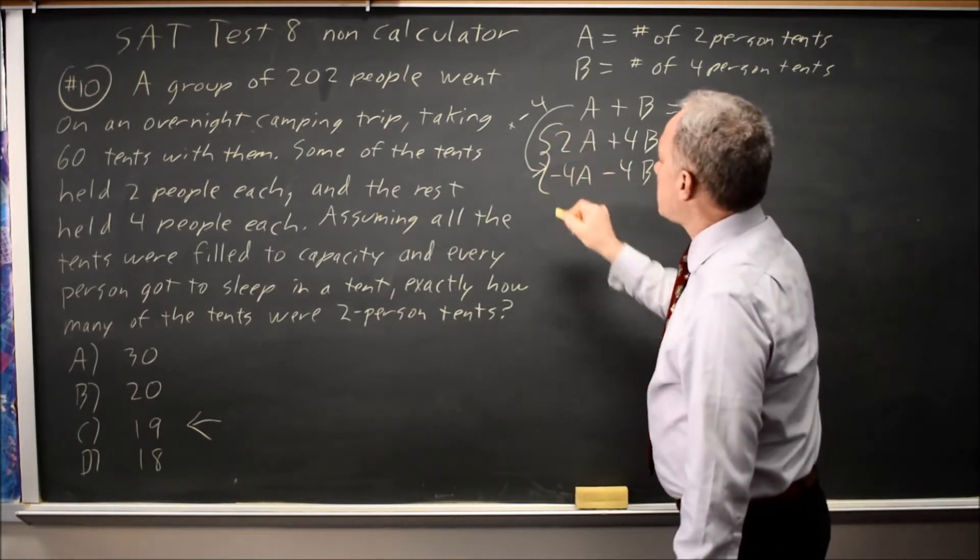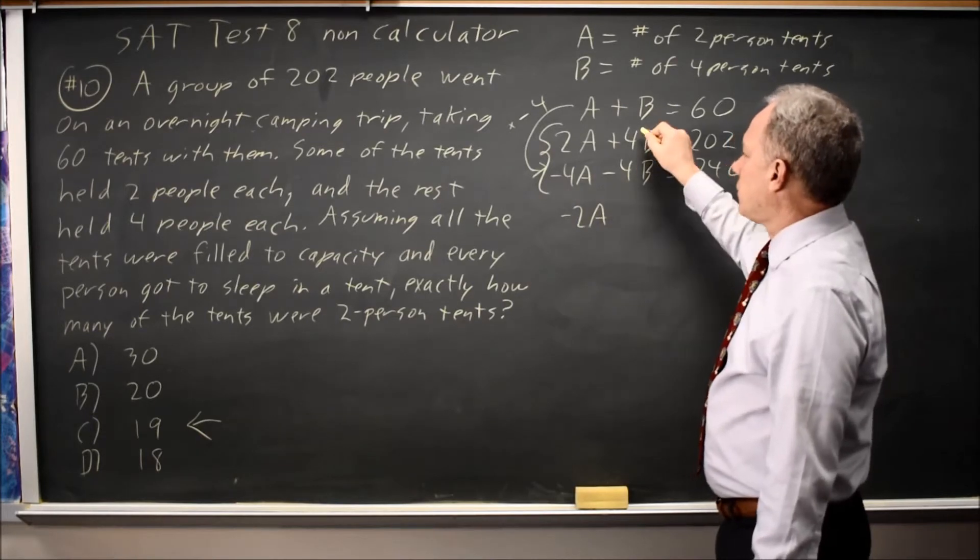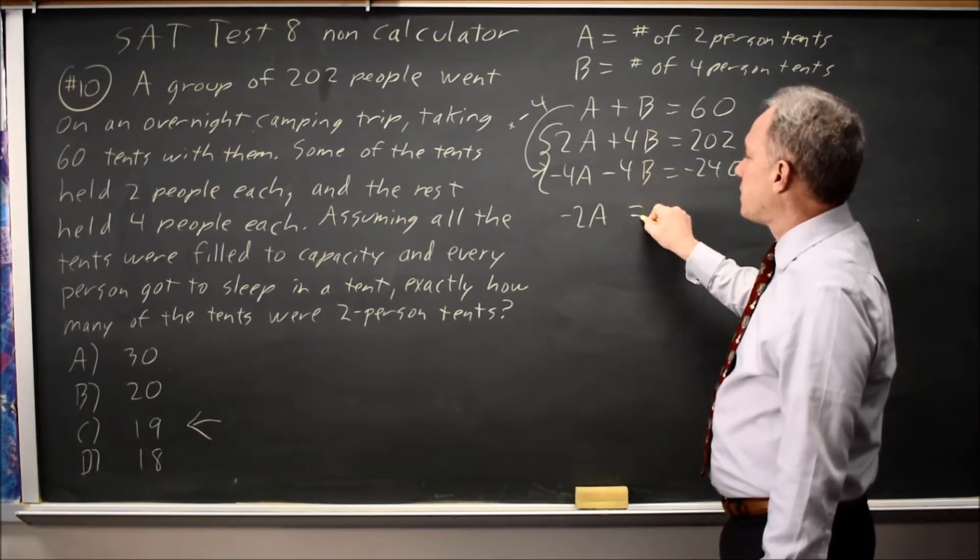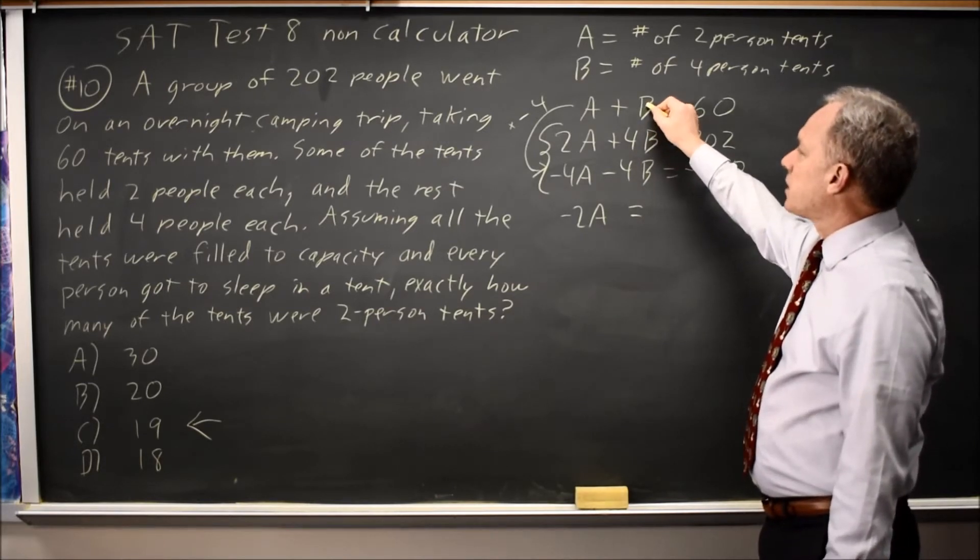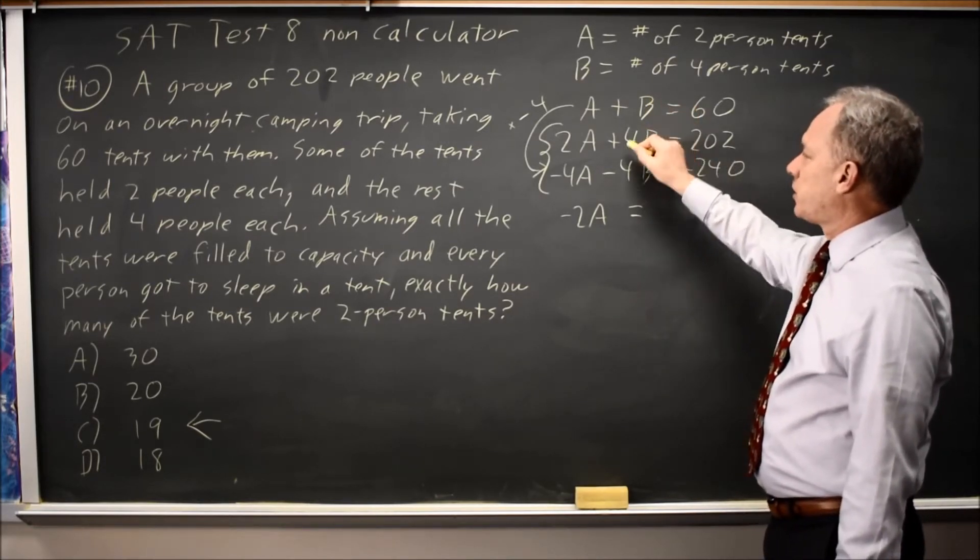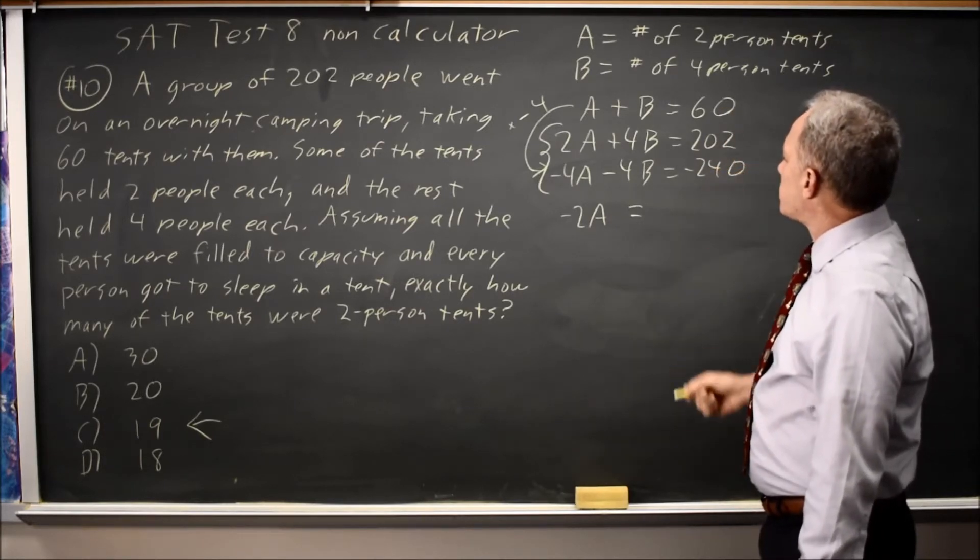If I add these two equations to each other, 2A minus 4A is negative 2A. 4B minus 4B is 0B. That's why I chose multiplying by negative 4, because then negative 4 times the first equation, when I add the B terms, I get 0B. 202 plus negative 240 is negative 38.